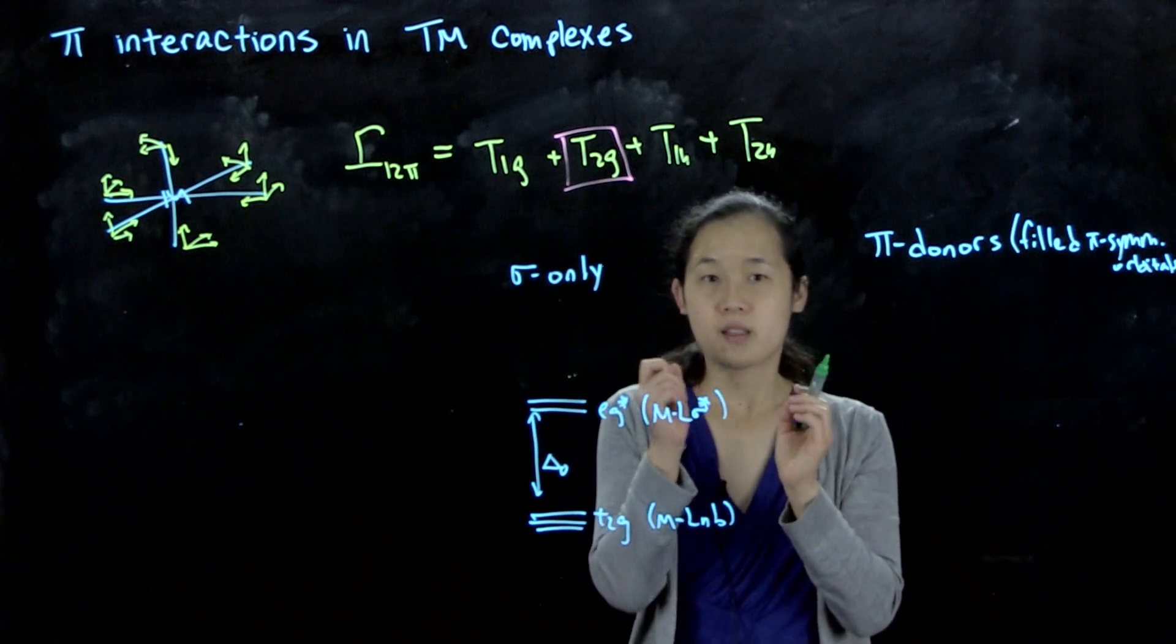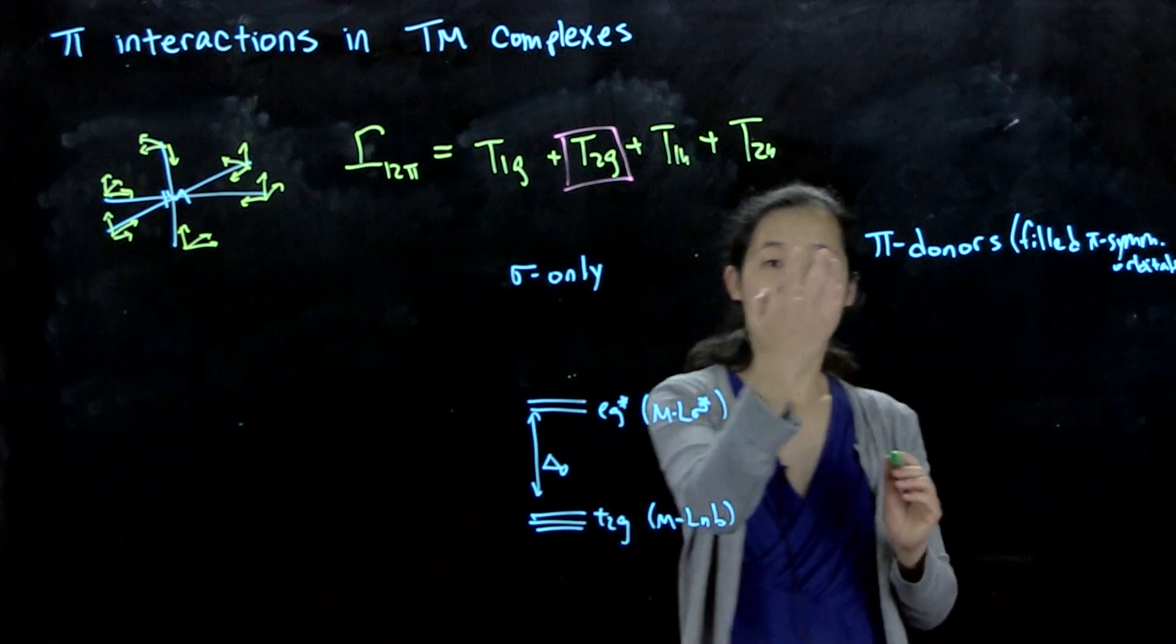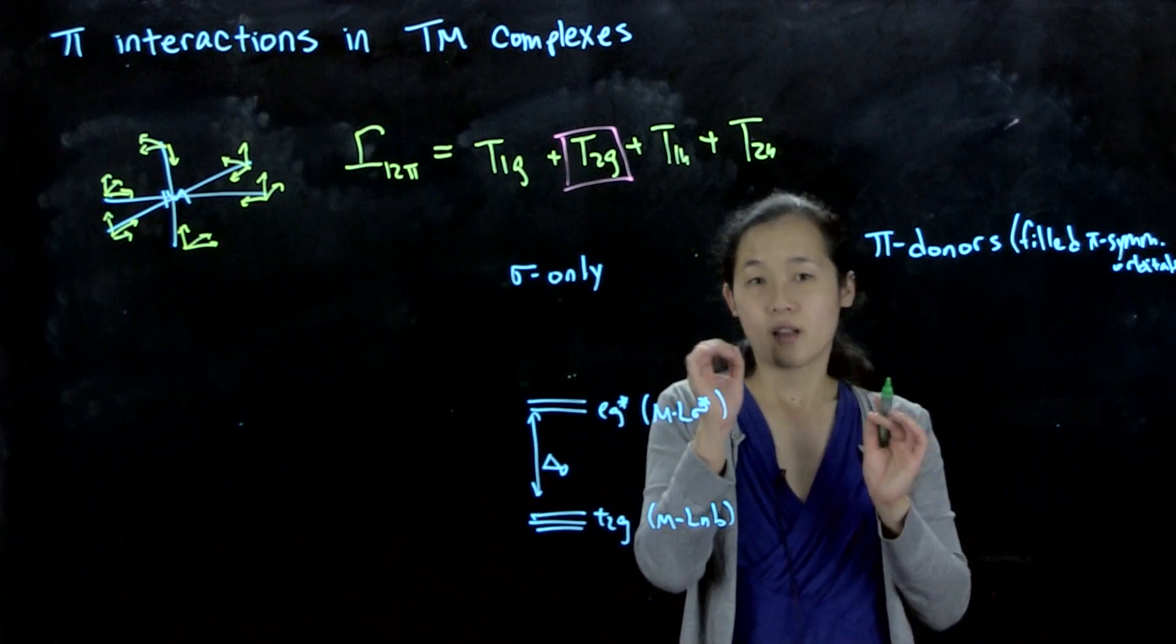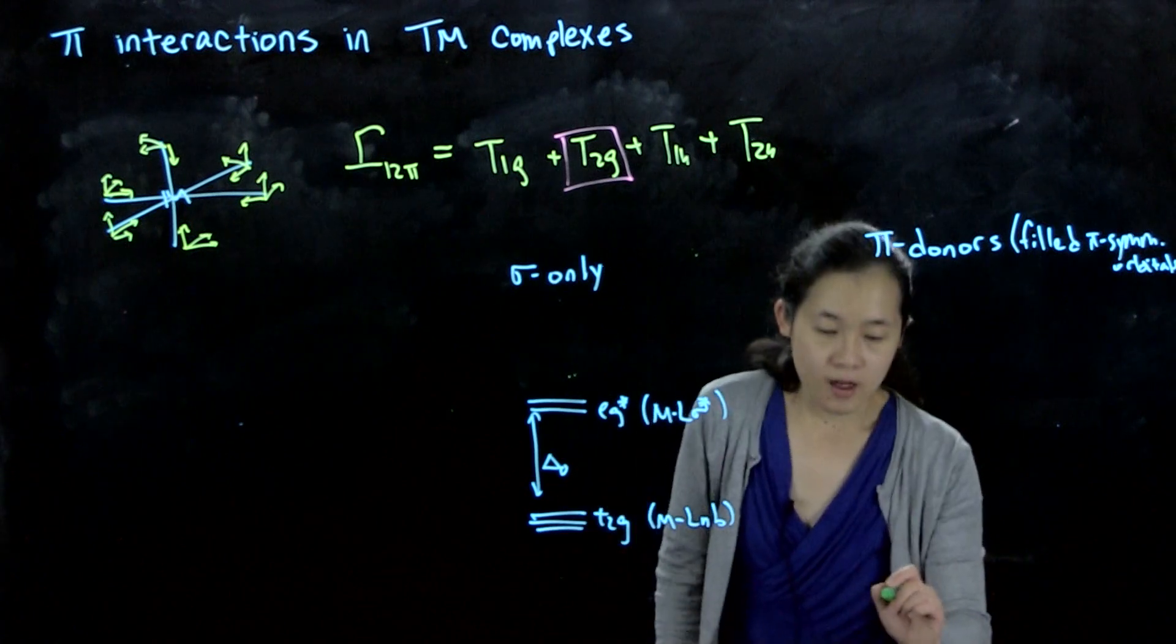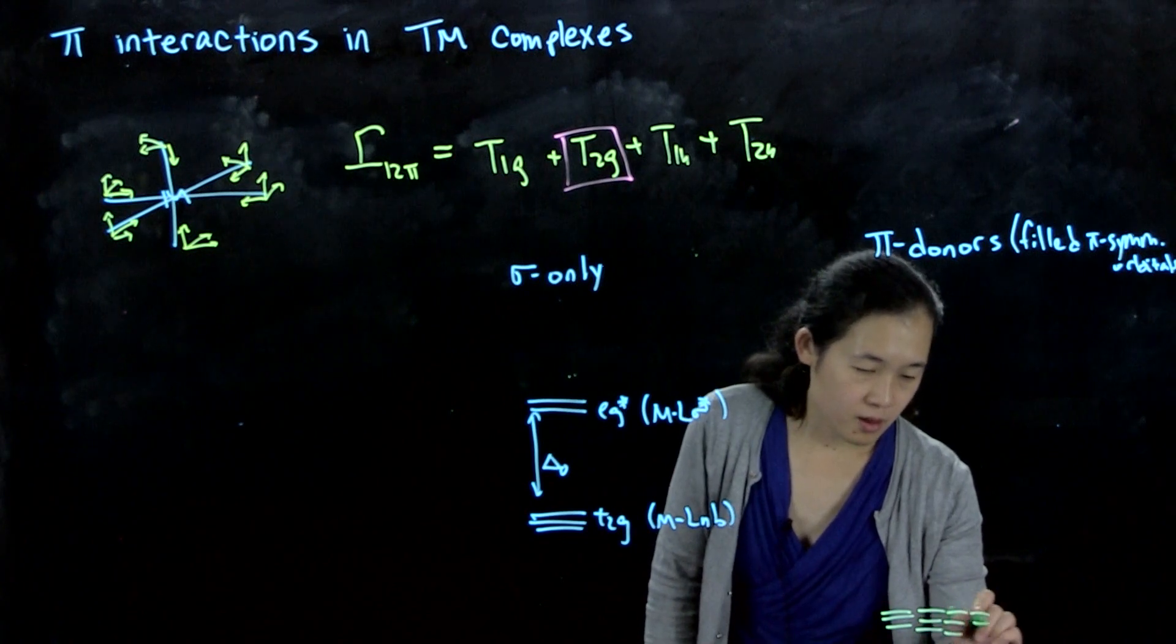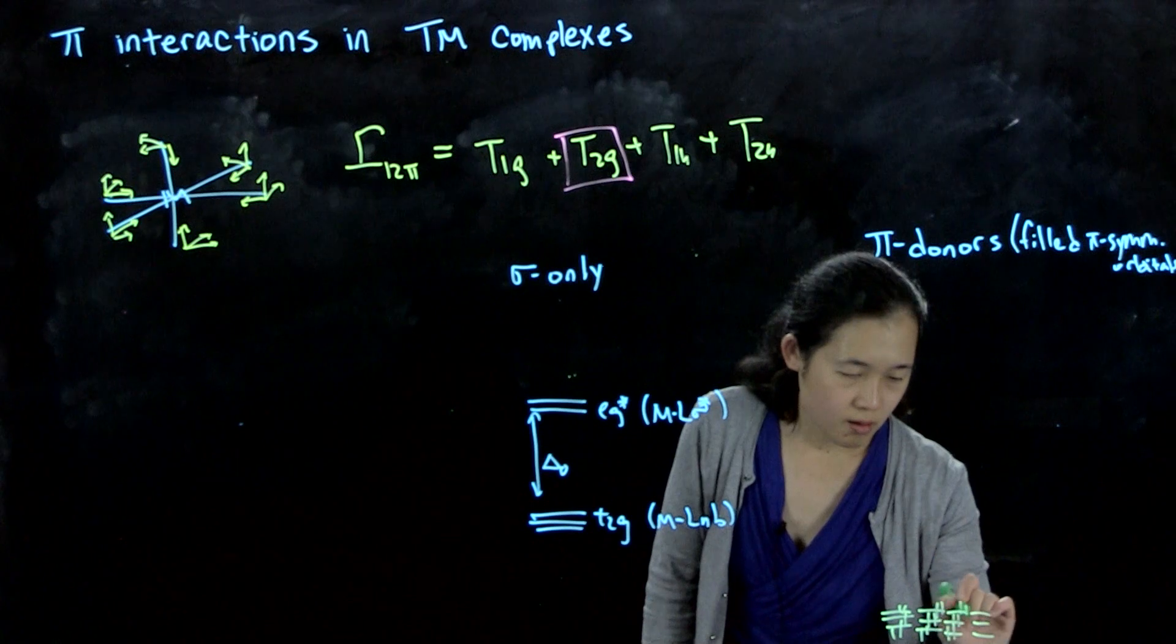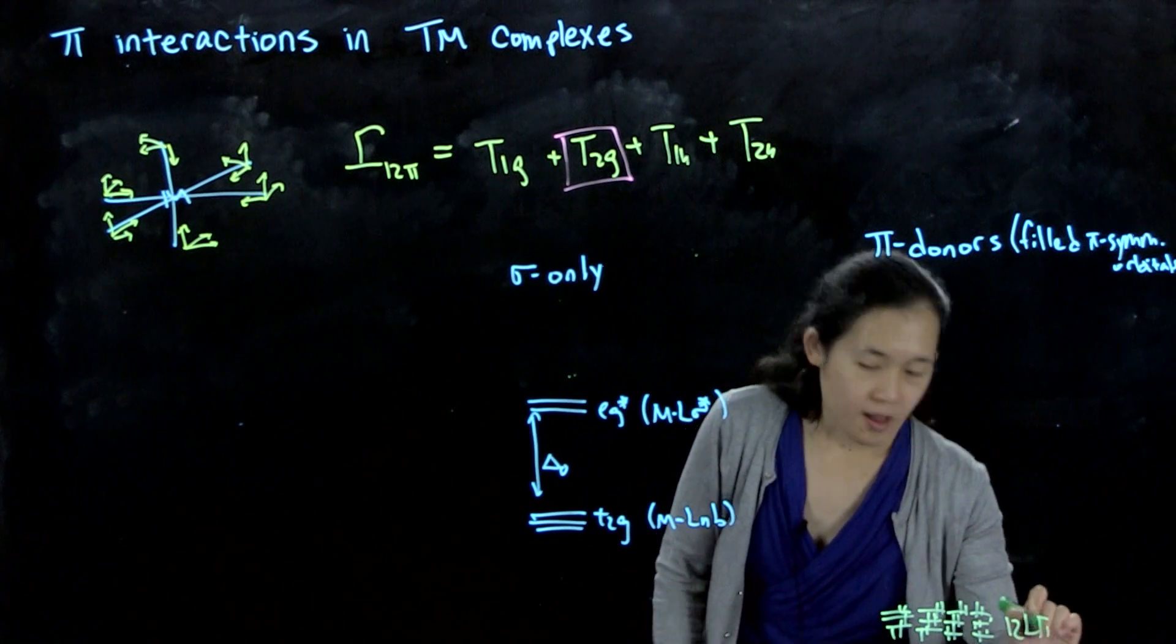When we think about where those filled orbitals are, the lone pairs, let's say we have a halide ligand. The lone pairs of the halide ligands should be the same energy as the sigma donating lone pairs, which means that they're going to be below the energy of the d orbitals of the metal because the ligands are more electronegative than the transition metals. So that means that our 12 pi-symmetry orbitals, which are of course all filled, these are our 12 L pi. They're low in energy.